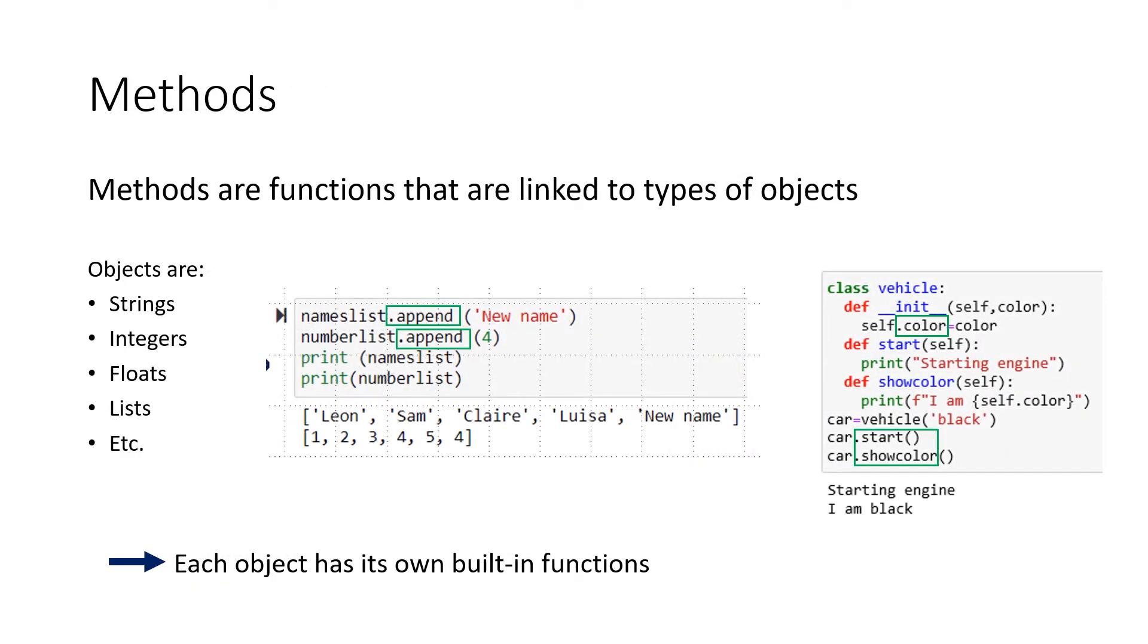Methods are functions that are linked to types of objects. Methods are quite similar to functions. They are pre-coded and built in into Python. The only big difference is that functions can stand alone, but methods always have to be linked to an object. And an object can be a string, it can be a float, a list, or whatever else kinds of objects you have.